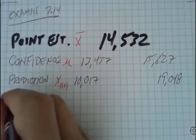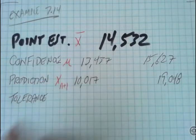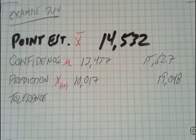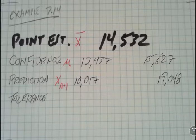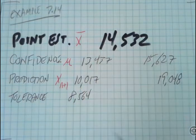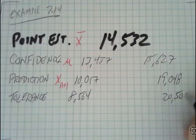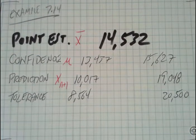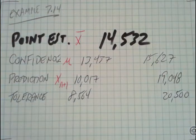The additional types of intervals we want to be able to calculate include the tolerance. The tolerance interval says, basically, what's my quality level going to be, or how many people actually fall within this range? The tolerance interval at 95% for this set of data turned out in our text to be 8,564 to 20,500. That's a much wider interval because here I'm trying to make an estimate of what will happen over the range of data.